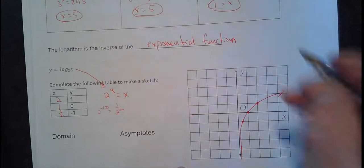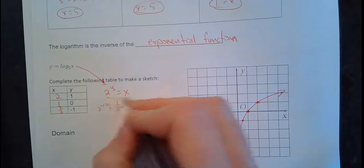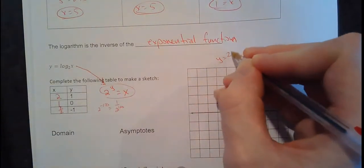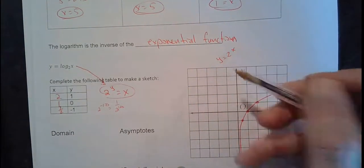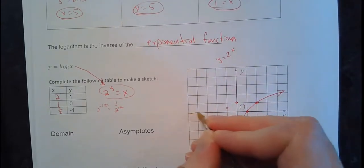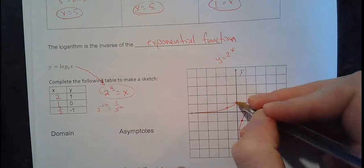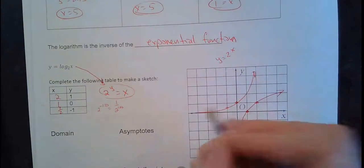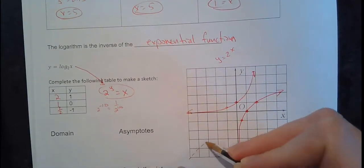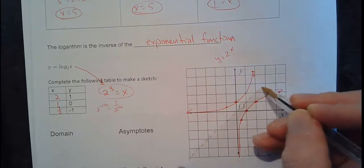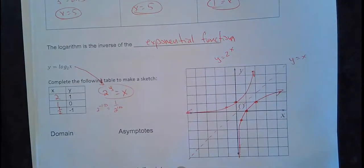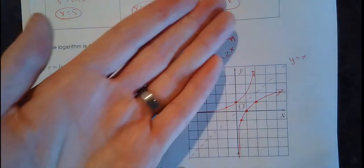It's going to come up along here and kind of shoot off to the right this way. Remember, this is the same thing as 2 to the y equals x. If y equals 2 to the x — the exponential — it's going to cross right here and kind of do this shape. Inverses reflect across the y equals x line, so the logarithm is just a reflection of the exponential across that line.